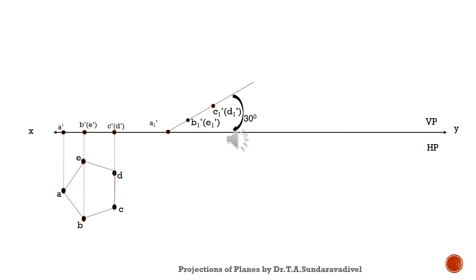We measure the A dash–C dash distance and transfer that distance to the inclined line, so we get the same line inclined at 30 degrees. This means the surface of the lamina is now inclined at 30 degrees — we have given the surface inclination. Note that A1 dash is touching the XY line, meaning a corner is resting on the XY line, satisfying two conditions: the surface makes 30 degrees and a corner is resting on HP.